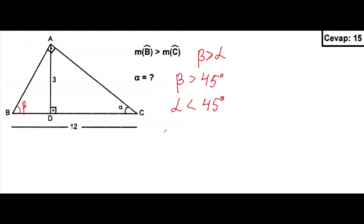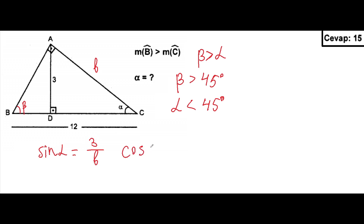We can use the sine theorem here. Sine alpha will equal to the side AC, which we can write as B, divided by three. And cosine alpha here will be equal to, in the big triangle, B over 12.